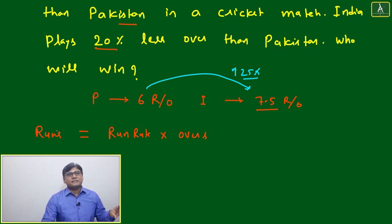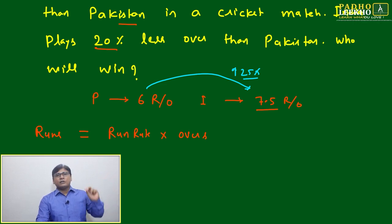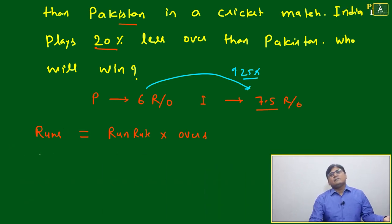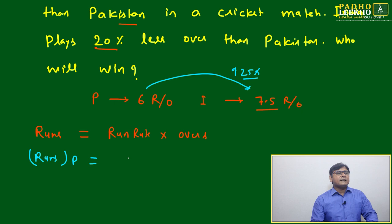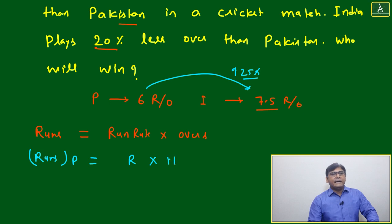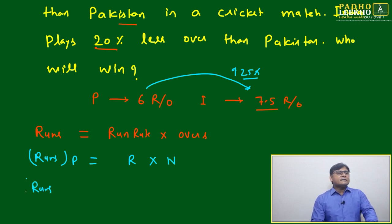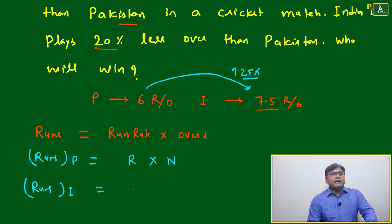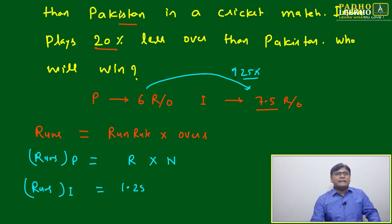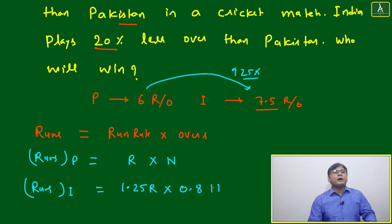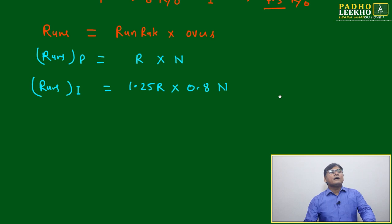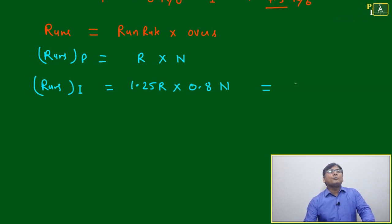We need to find total runs for India and Pakistan — whoever makes more runs wins. For Pakistan: run rate = r, overs = n, so runs for Pakistan = r × n. For India: run rate is 25% better than Pakistan, so India's run rate = 1.25r. India plays 20% fewer overs, so overs = 0.8n.